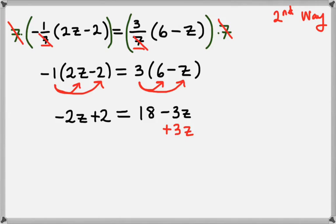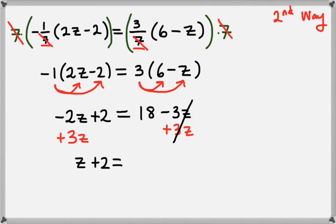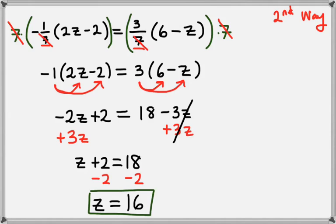Now we want to add 3z to both sides. This is going to get all of our z's over on the left hand side. They'll cancel on the right, and we'll be left with negative 2z plus 3z, which gives us z, plus 2, equals 18. Now we subtract 2 from both sides, leaving us with z equals 18 minus 2, which is 16. So z equals 16 is our final answer.